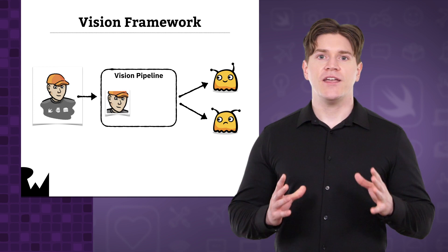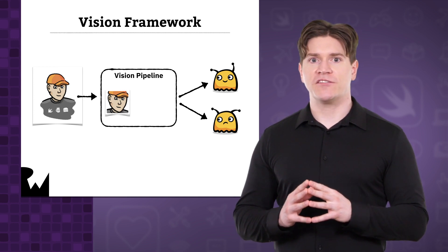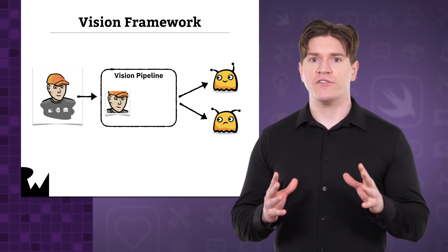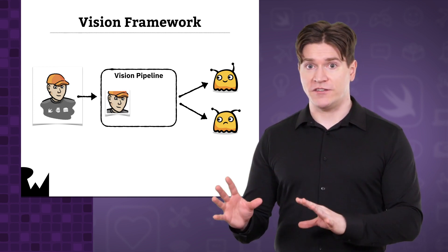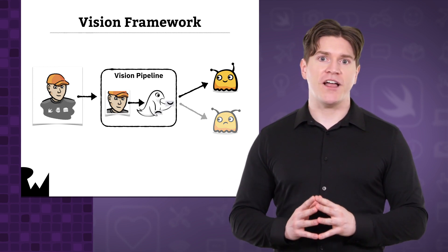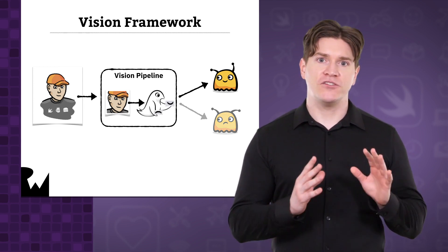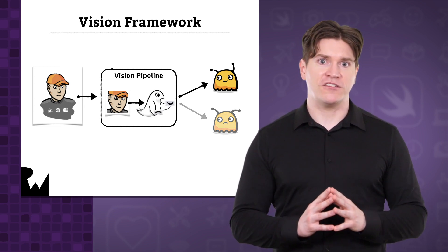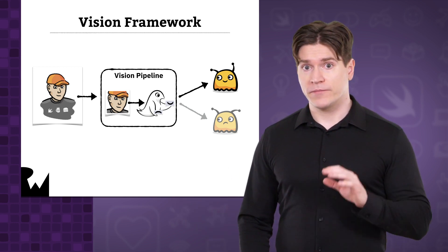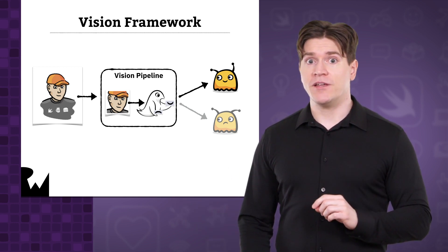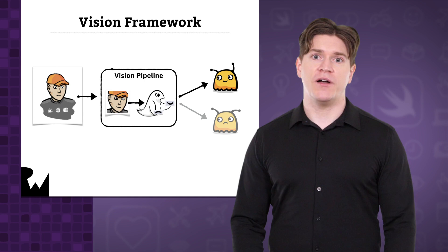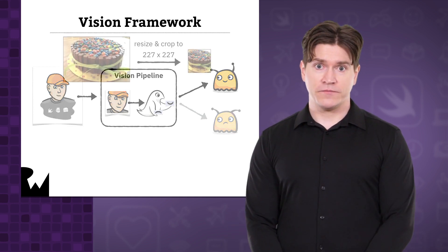For example, in an app that detects people's emotions, you can build a vision pipeline that first detects a face in the image, and then runs a Core ML-based classifier on just that face to see whether the person is smiling or frowning. It's highly recommended that you use Vision to drive Core ML if you're working with images.